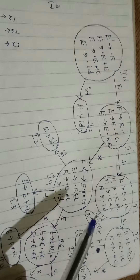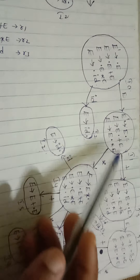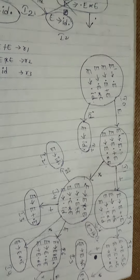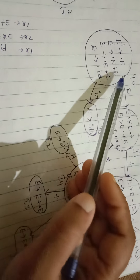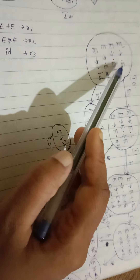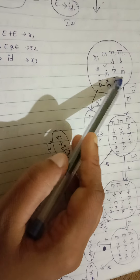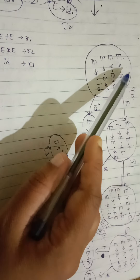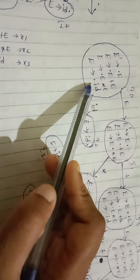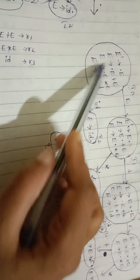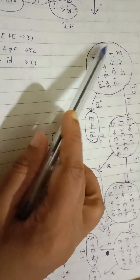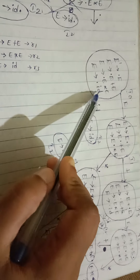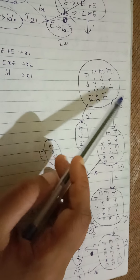Using LR(0), we draw the data flow diagram. First, we take the augmented production: E' tends to E. Then we place the dot at the start of the right-hand side for canonical LR(0) items. State i0 contains: E' → •E, E → •E plus E, E → •E star E, and E → •id.